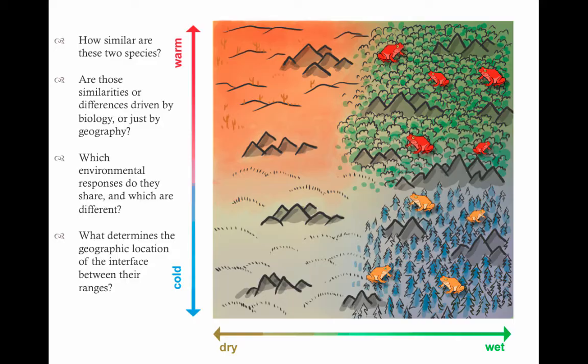When we're making comparisons between a pair of species, we're asking very different questions. We're asking how similar a pair of species are? Are those things driven by biology or just geography? Like if there are differences between allopatric species, is that just because they live in different places, or is it because they're actually doing different things?